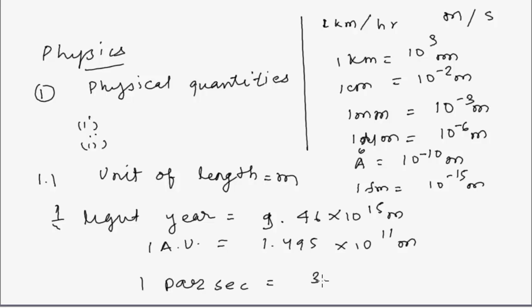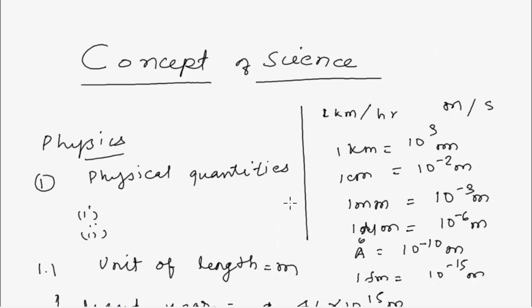Similarly, one AU, one astronomical unit, is 1.495 into 10 to the power 11 meter. One parsec equals 3.084 into 10 to the power 16 meter. Let us move to unit of mass.